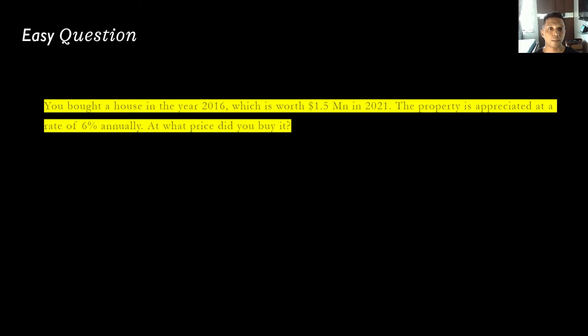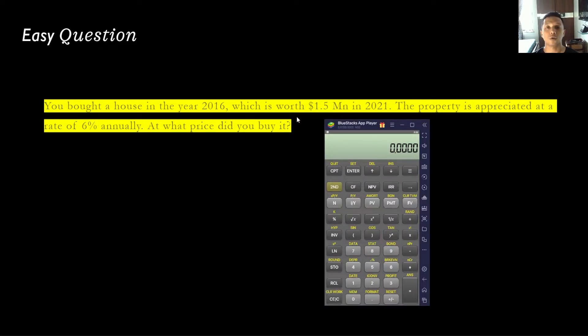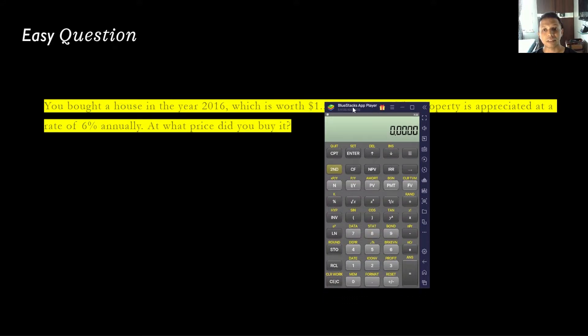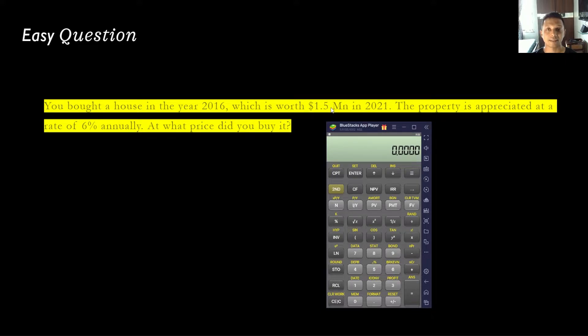The first simple question: you bought a house in 2016 which is worth about 1.5 million dollars in 2021. The property appreciated at a rate of 6% annually. What is the price you bought it for? So the future value of this house is 1.5 million dollars — that is the value we start with.